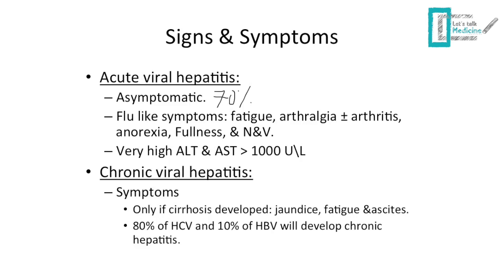Now let's talk about signs and symptoms. For acute viral hepatitis, 70% of patients are asymptomatic. The rest may have flu-like symptoms due to the complement system, including fatigability, arthralgia with or without arthritis, anorexia, fullness, nausea, and vomiting. There will also be elevated liver enzymes due to hepatocyte damage. For chronic hepatitis, if cirrhosis develops, patients will have jaundice, ascites, and fatigue. Remember that 80% of hepatitis C patients and 10% of hepatitis B patients will eventually develop chronic infection.